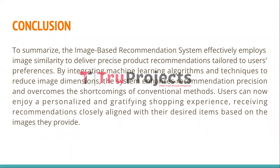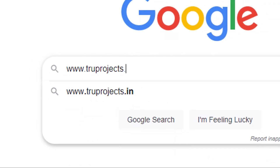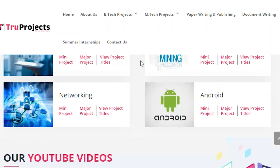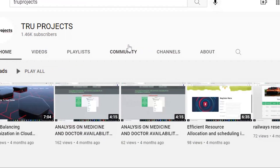In conclusion, the image-based recommendation system effectively employs image similarity to deliver precise product recommendations tailored to user preferences. By integrating machine learning algorithms and dimensionality reduction techniques, the system enhances recommendation precision, overcoming the shortcomings of conventional methods. Users can now enjoy a personalized shopping experience receiving recommendations closely aligned with their desired items. Thank you for watching. For more projects, please visit www.trueprojects.in and subscribe to the True Projects YouTube channel.